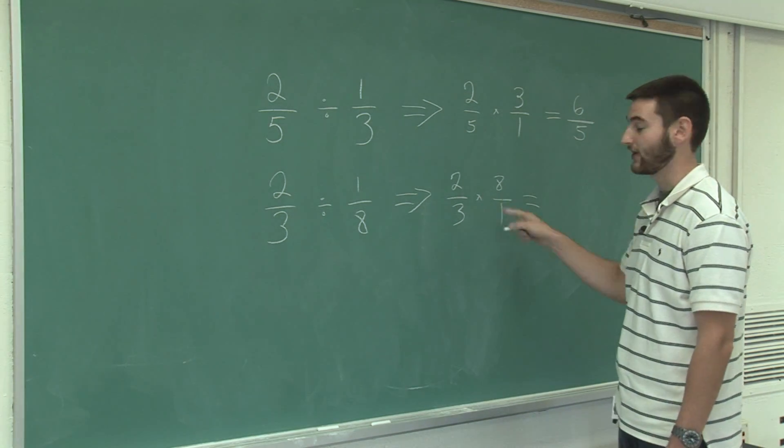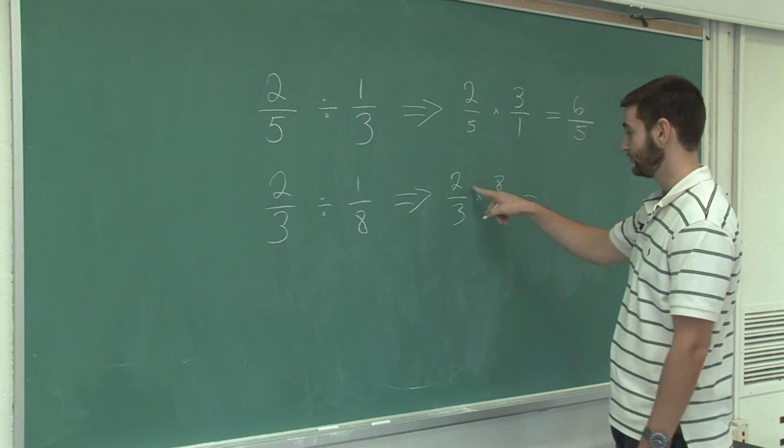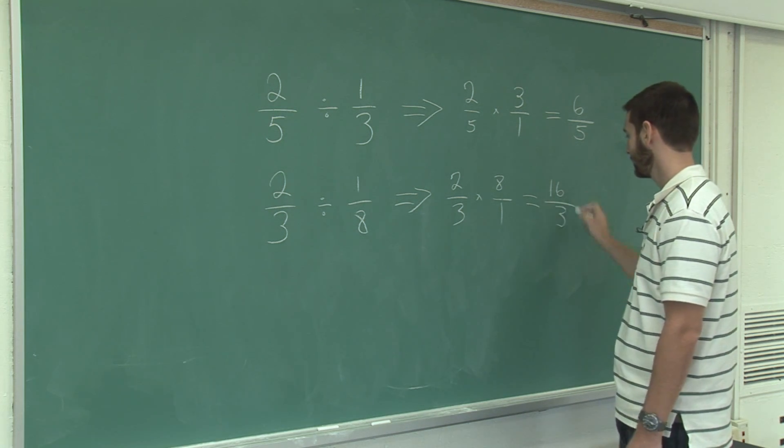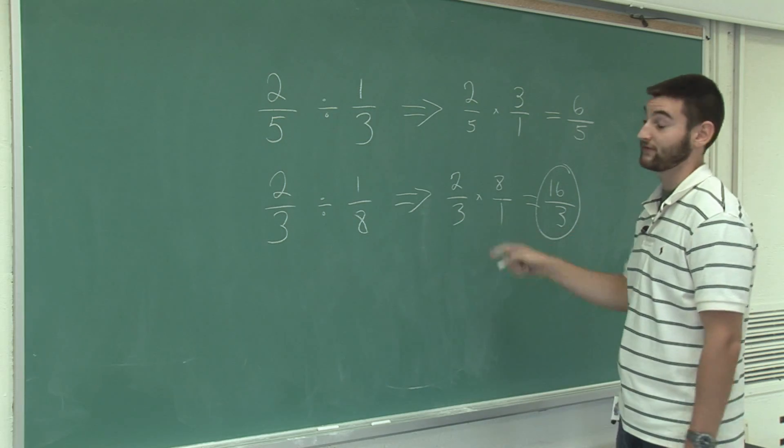Now we have a straightforward fraction multiplication problem. Two times eight is sixteen. Three times one is three. That's how you divide fractions.